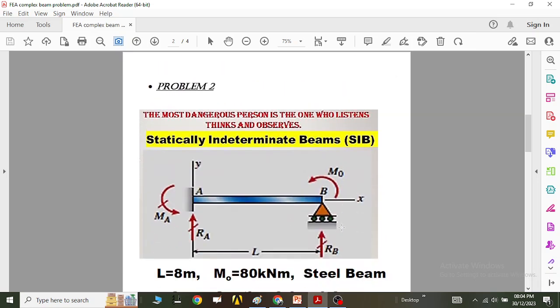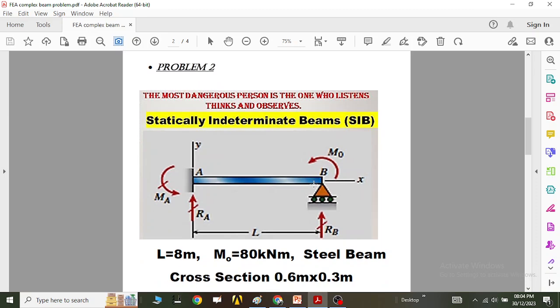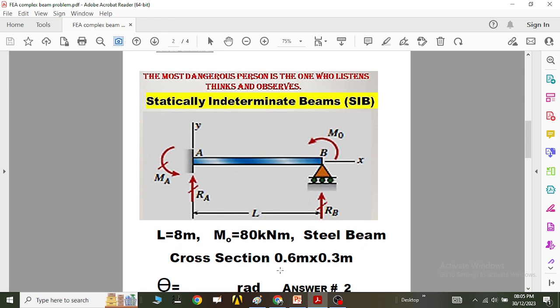This is the second problem. Again, we have already solved this problem analytically during our classes. And now you need to solve this problem through an FE approach. I have given you the values of the length as 8 meter and moment as 80 kilo Newton meter, and I have given you a simple cross section of 0.6 into 0.3 meters, which is basically your rectangular beam.